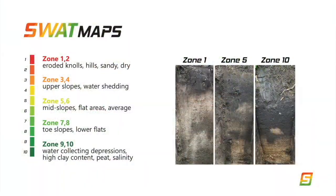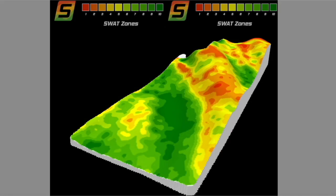In this field, we variable-rated the nitrogen and the seed to try and maximize crop input dollars and yield potential for those areas. The nulls in this field this year, when we nitrate-tested them, came back at about 25 ppm using a 12-inch sample. The mid slopes were about 40 ppm, and the depressions came back in the 70 ppm range — quite a bit higher than the rest of the field.